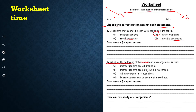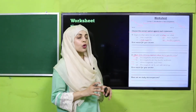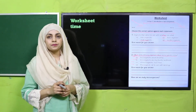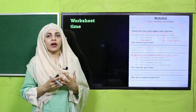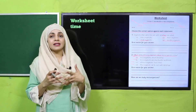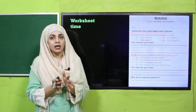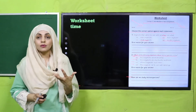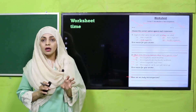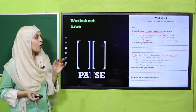Next question: which of the following statements about microorganisms is true — microorganisms are all around us, microorganisms are only found in the washroom, all microorganisms cause illness, or microorganisms can be seen with the naked eye? Option A is correct: microorganisms are all around us — on your hands, in air, water, everywhere. The next question: how can we study microorganisms? We can study them under a microscope. Now pause the video and complete the worksheet.